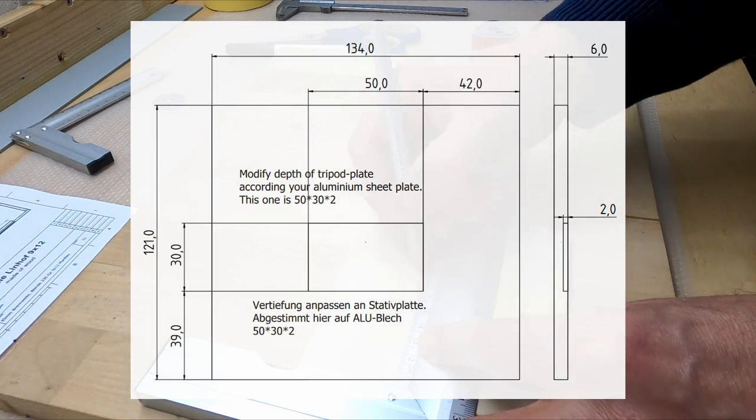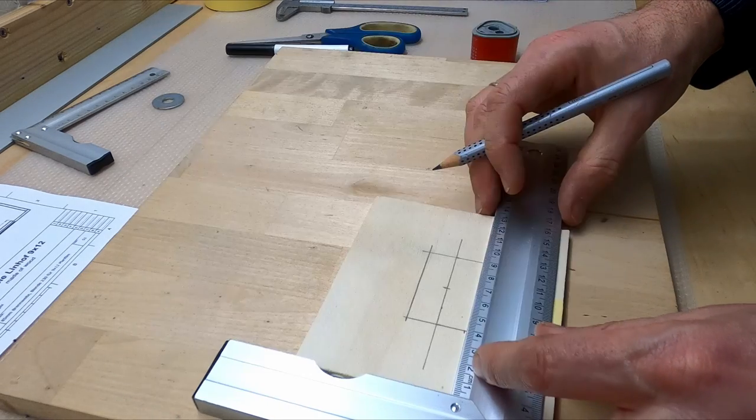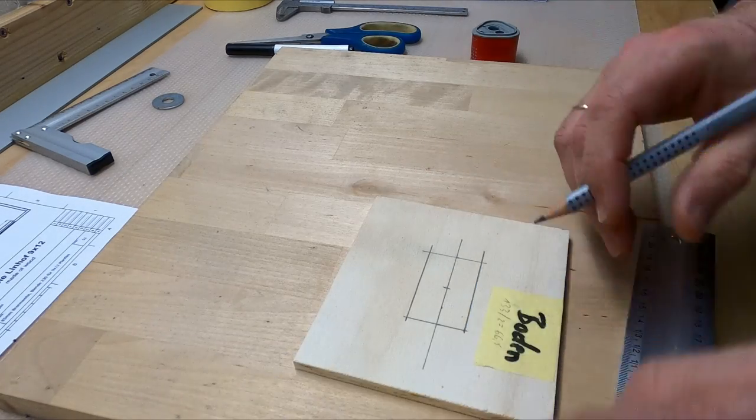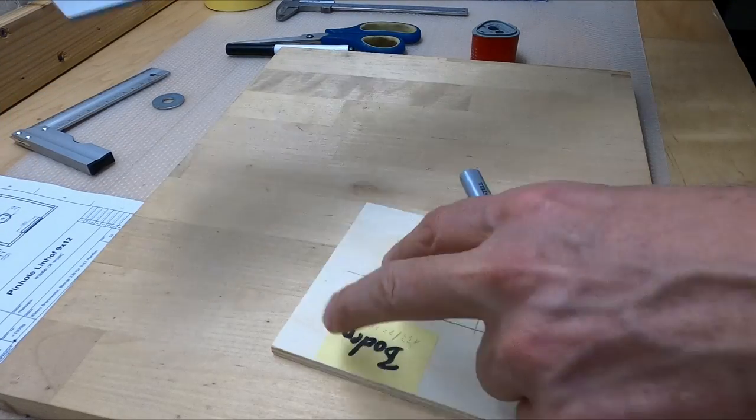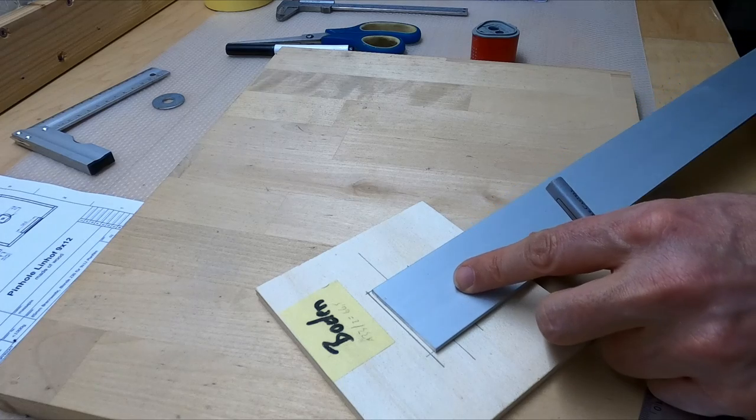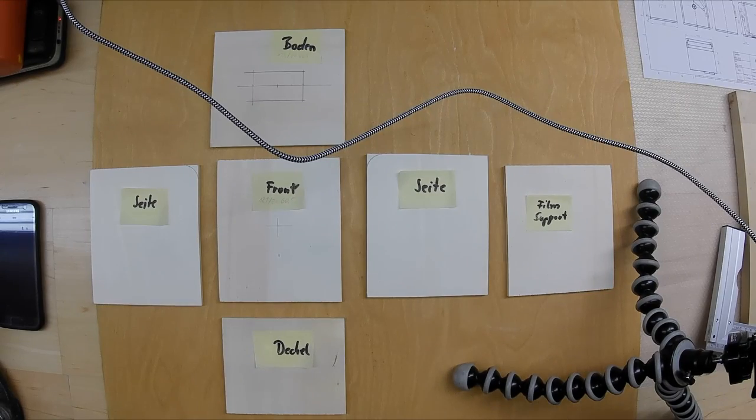This will be followed by the bottom to make sure that we can insert the small part of aluminum. This is from the aluminum profile which will be cut later on and then fits perfectly in this small hole.